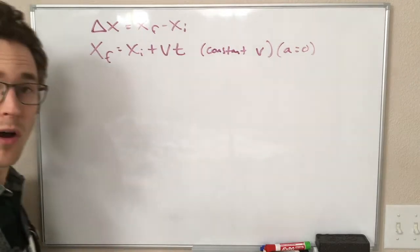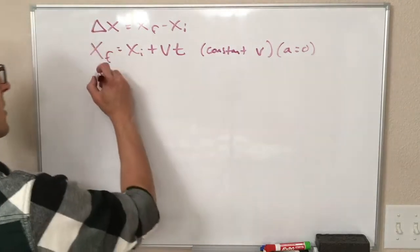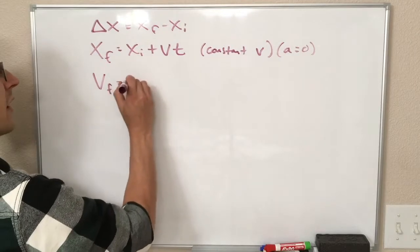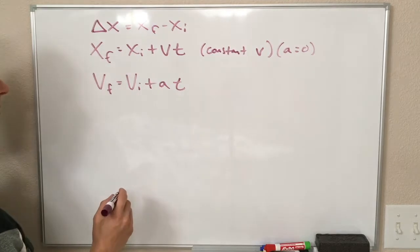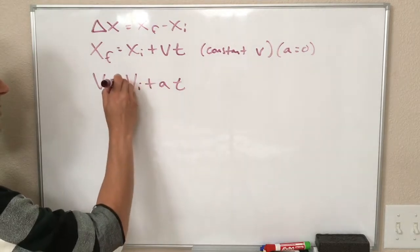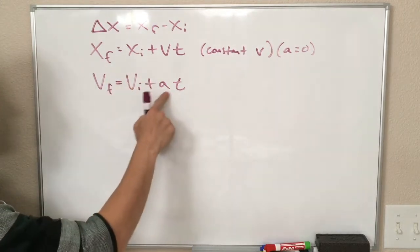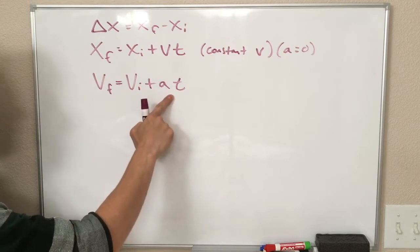And then we learned that our velocity can change if we have acceleration, and that looks like v-final is equal to v-initial plus at. So as our velocity changes over time, it changes linearly with our acceleration.